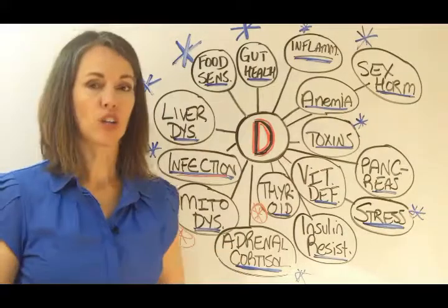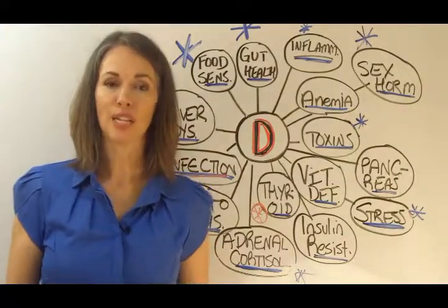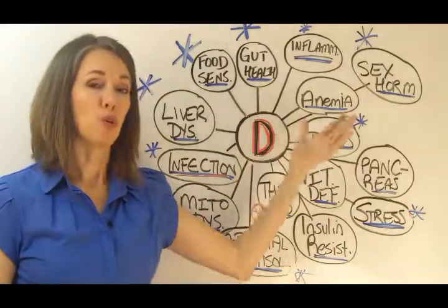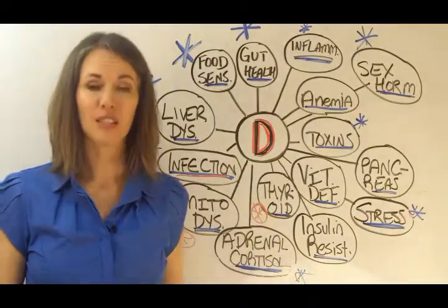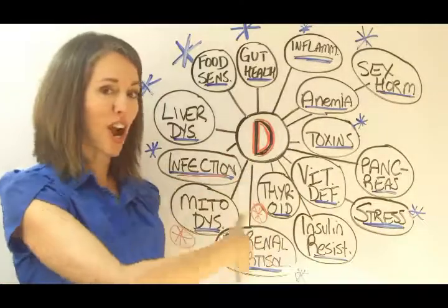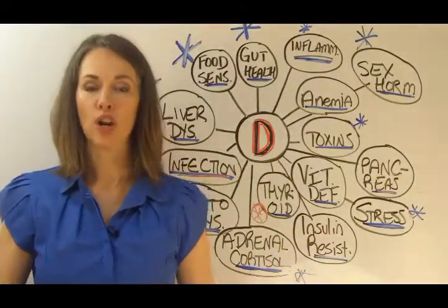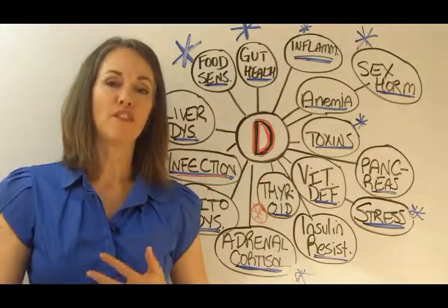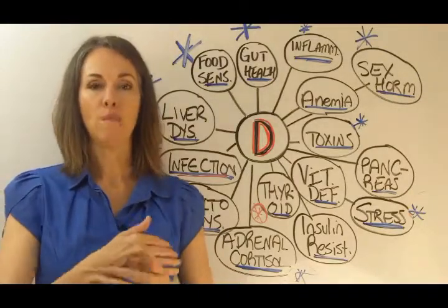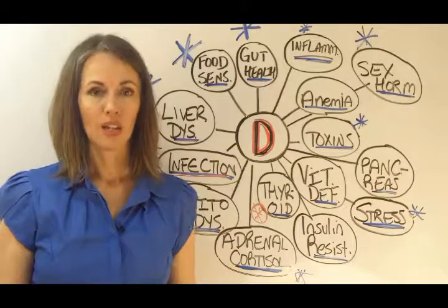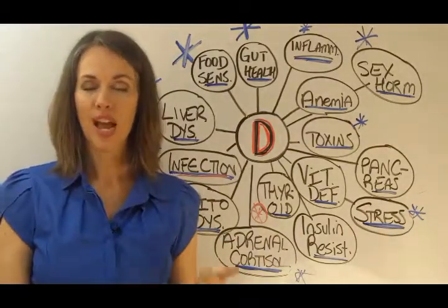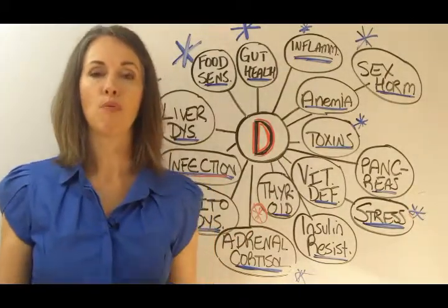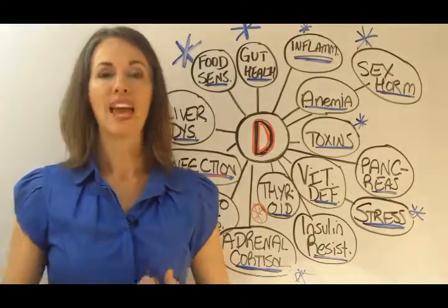If you have mitochondrial dysfunction, there are several things we need to assess for why that might be happening — it might be infections, toxins, hormone imbalances, vitamin and nutrient deficiencies, or chronic stress. All these things are interconnected. There are certain things that need to be done to get your mitochondria back on track so that your body can efficiently burn fuel again, which means you'll be better at maintaining normal blood levels of glucose. Mitochondrial dysfunction has to be checked and addressed, as well as thyroid dysfunction, because both are very important for cellular metabolism and efficiency of burning fuel.